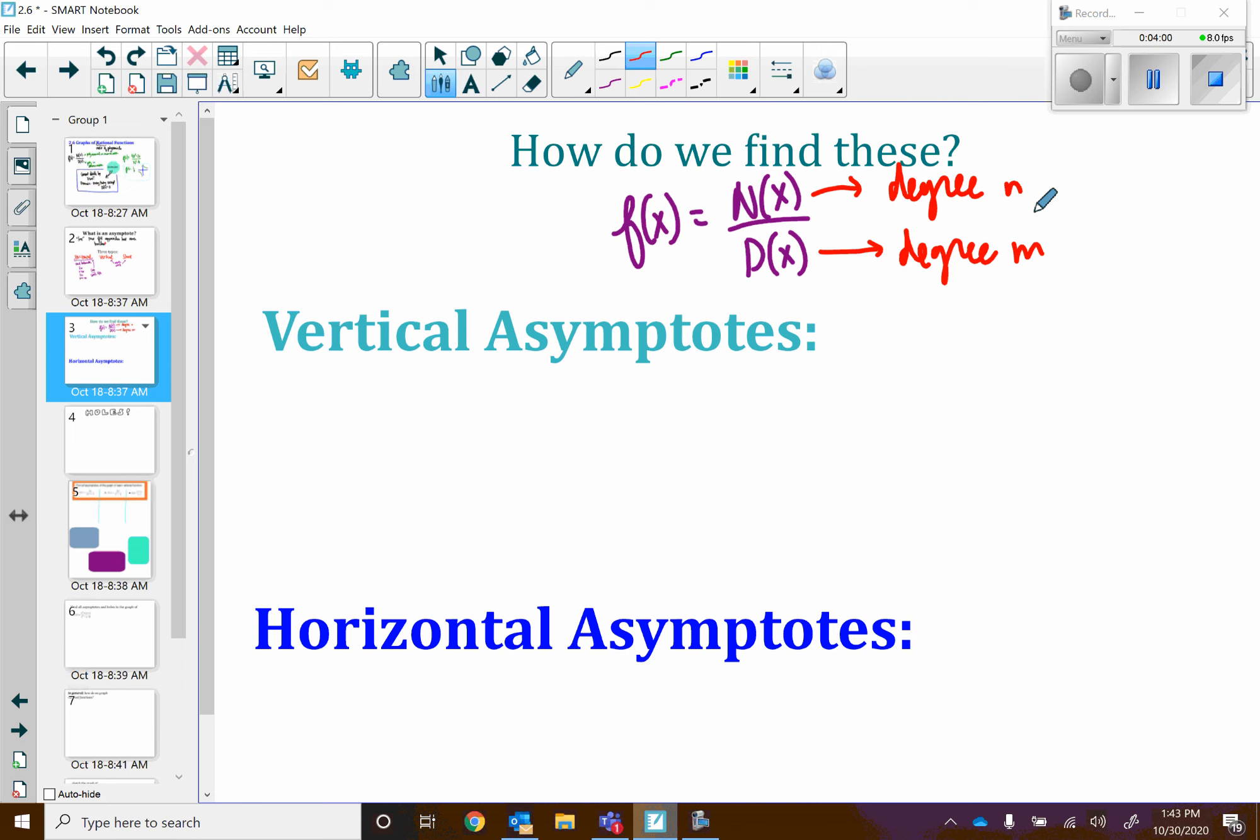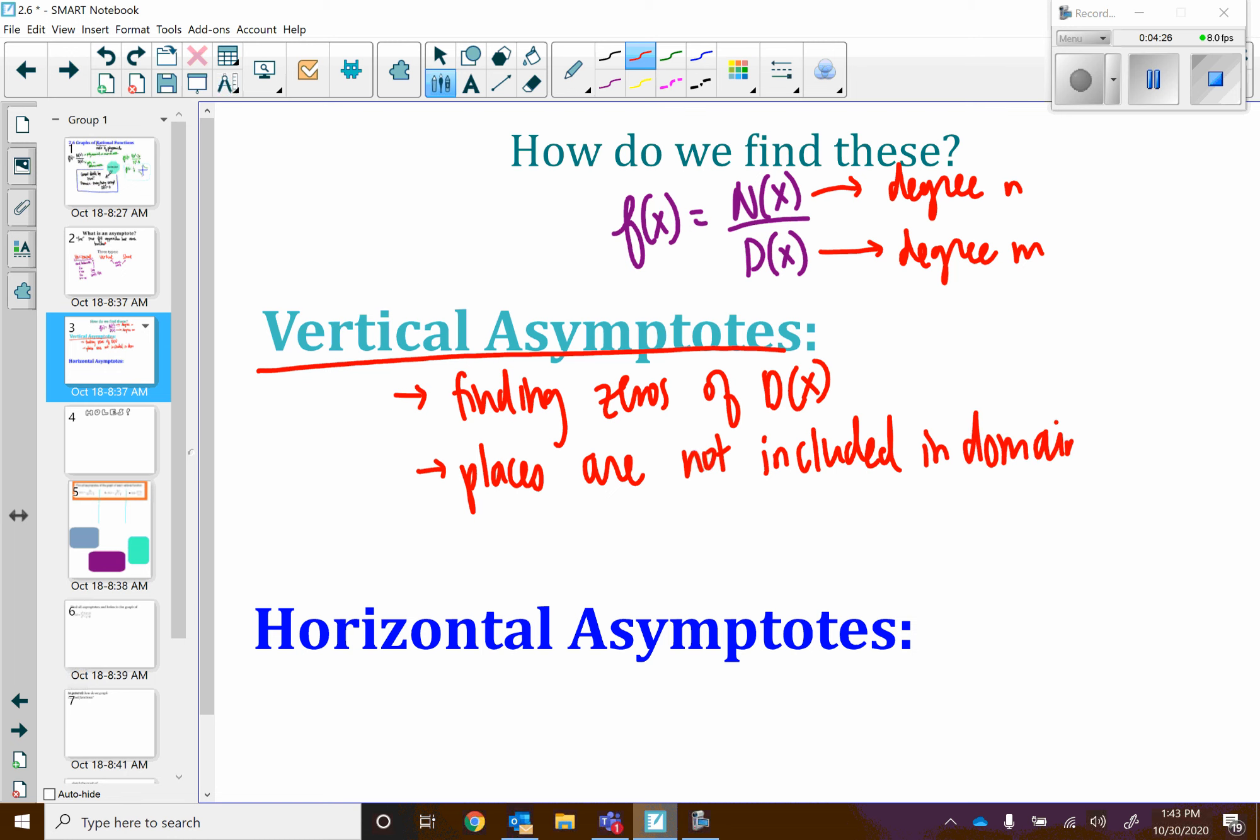If we consider vertical asymptotes, vertical asymptotes are going to be found by finding the zeros of our denominator. These are the places that are not included in the domain of our function. You can have multiple vertical asymptotes. It's possible to have, well, however many zeros the denominator has would be the number of vertical asymptotes.